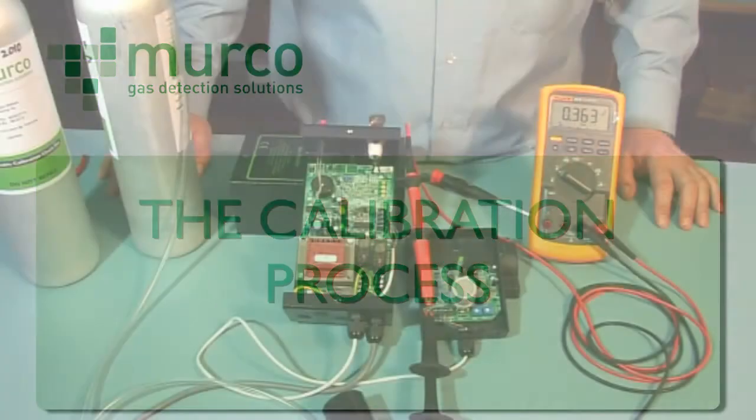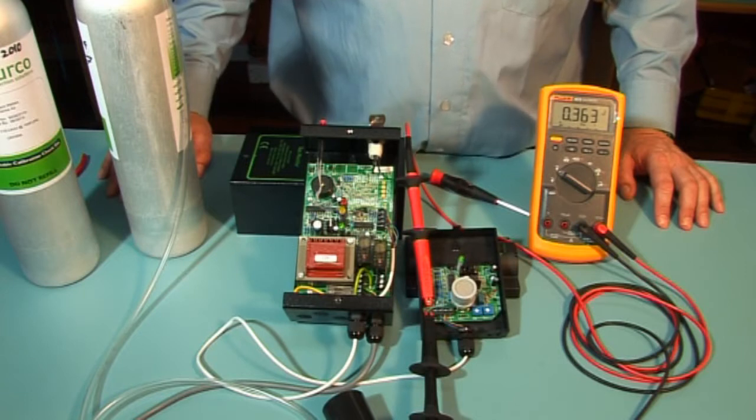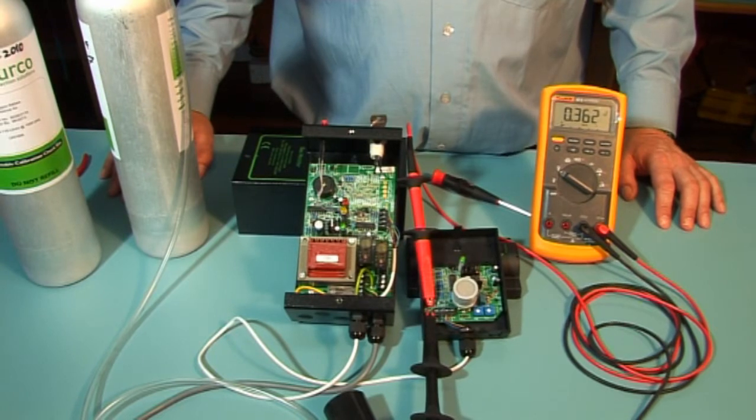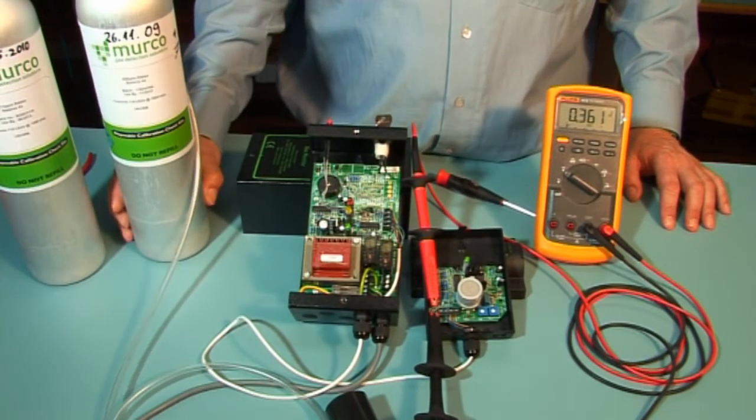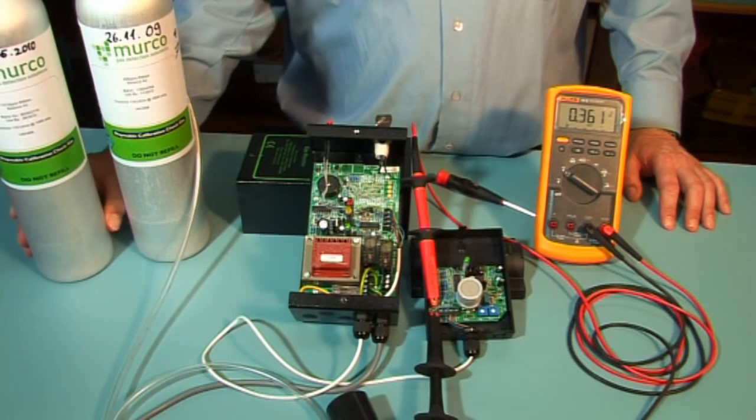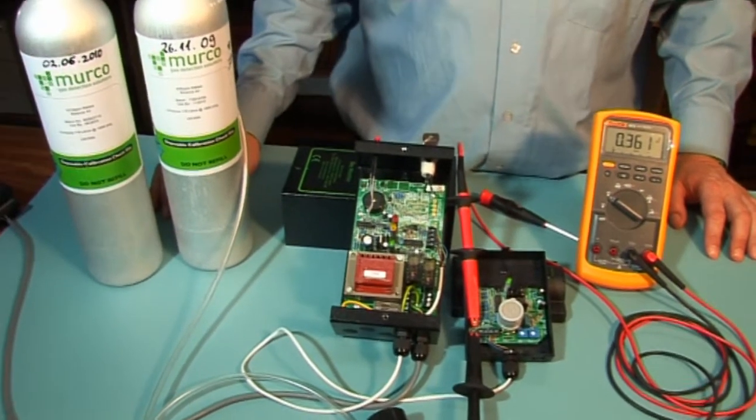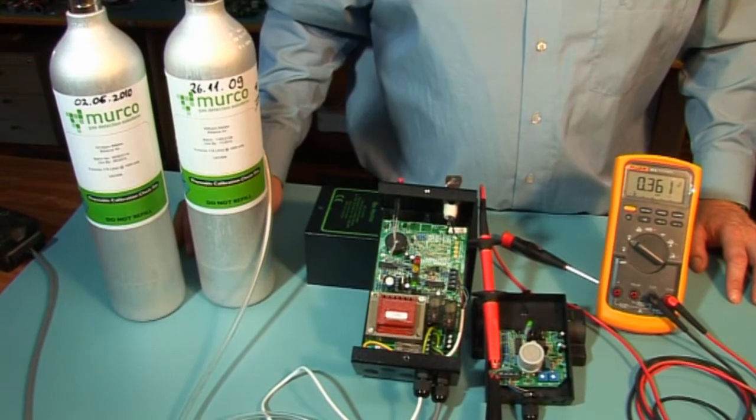There are two ways to carry out this calibration. One is to calibrate for the high-level alarm and use the electrical values to set the low level. This requires one cylinder of gas. The other is to use two cylinders of target gas, one for each of the low level and high level.